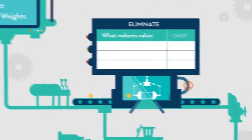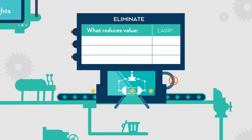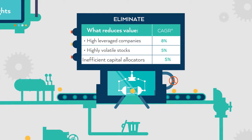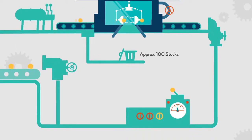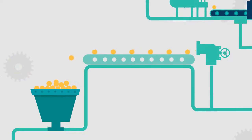The elimination process scans companies for value-diminishing components like very high debt, excessive price volatility, and inefficient capital allocators. Removing almost 80 to 100 companies at this stage, the ones that qualify move to the next step, which is selection.